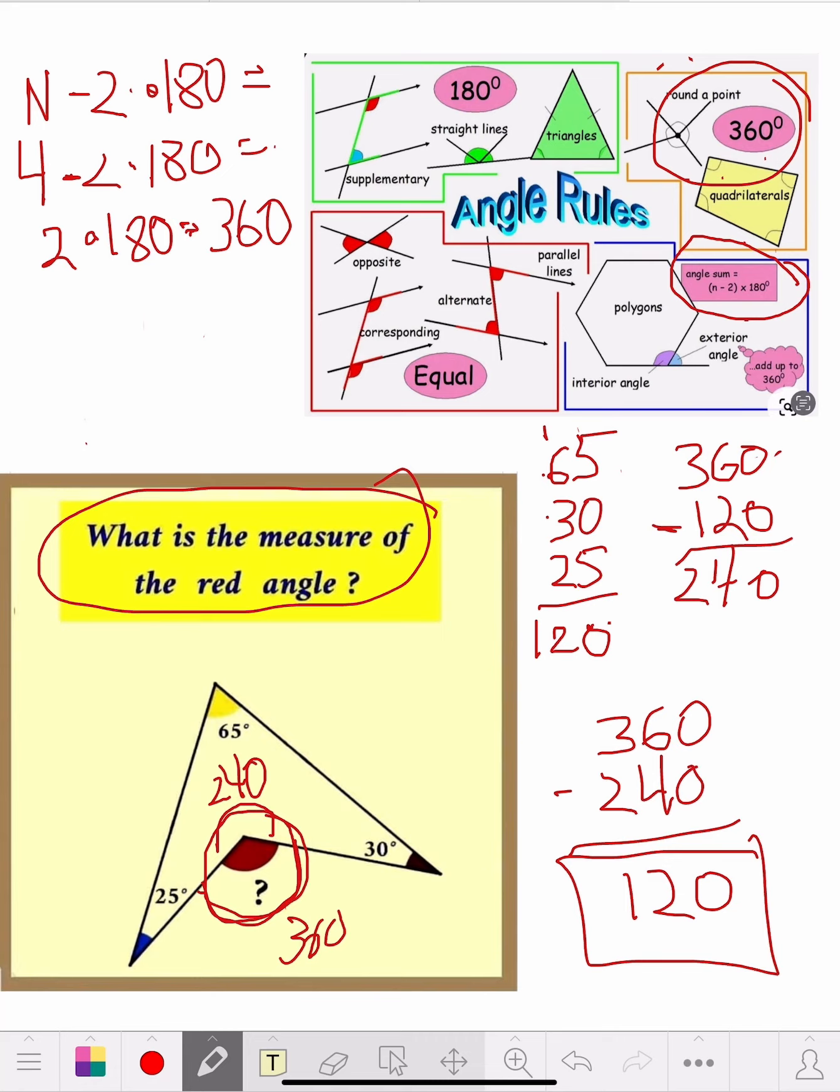So if that was five sides, six sides, seven sides, it wouldn't matter. You can use this formula. The N minus 2 times 180 equals how many degrees you're inside. Whatever figure they give you.